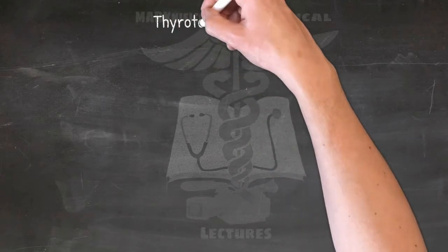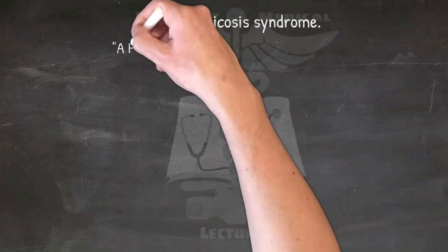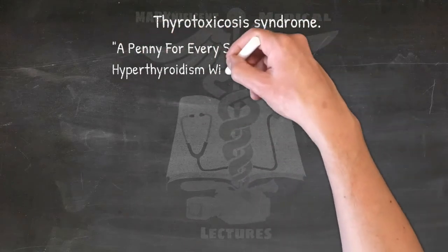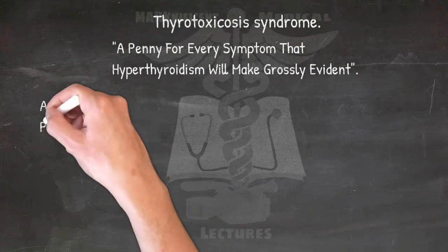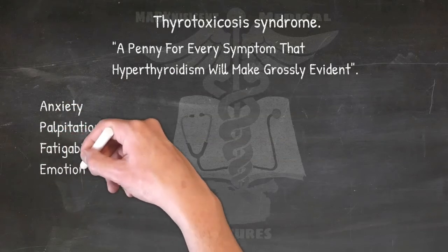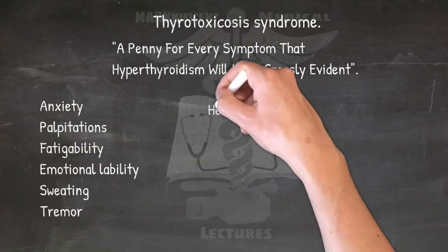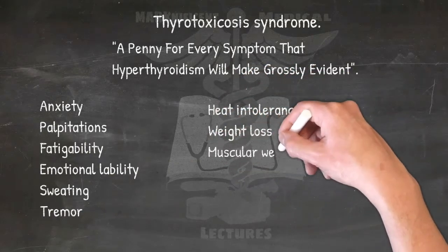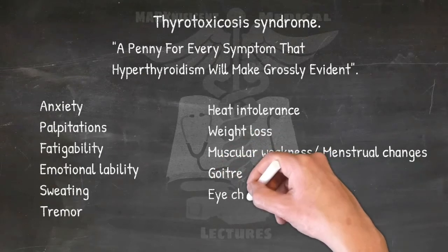Signs and symptoms of thyrotoxicosis syndrome — a penny for every symptom: Anxiety, Palpitations, Pulse rapid, Fatigability, Emotional lability, Sweating, Tremor, Heat intolerance, Weight loss with good appetite, Muscular weakness, Menstrual changes, Goiter, and Eye changes.